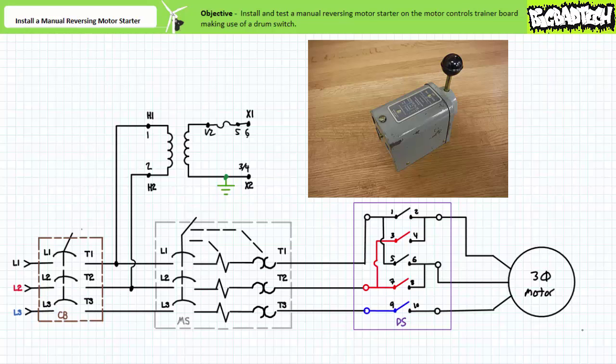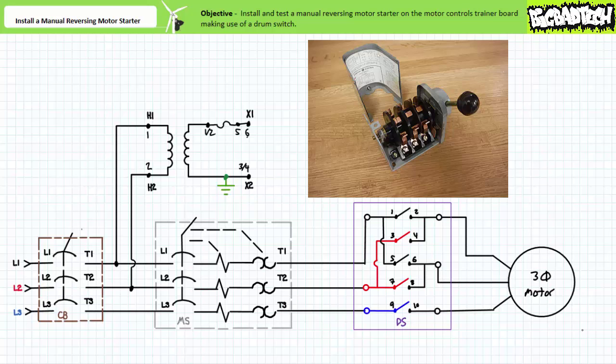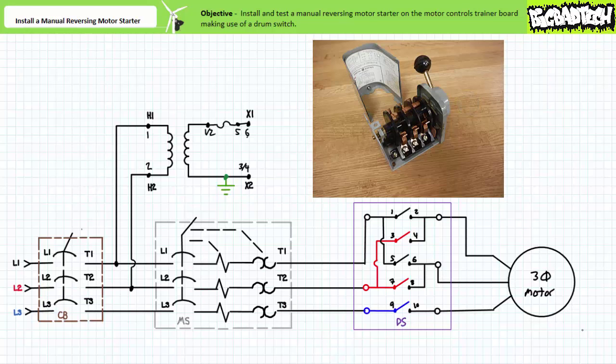This particular drum switch is something I scavenged. The wiring diagram shows no connection is made in the center off position. In the forward position, applied phase sequence as seen by the motor is such that it rotates in one direction. In the reverse position, applied phase sequence as seen by the motor is such that it rotates in the opposite direction.